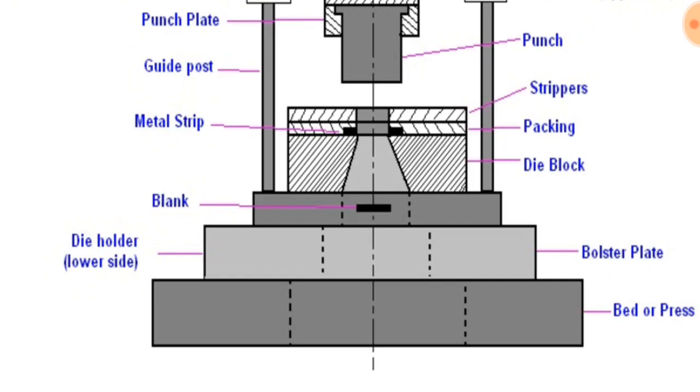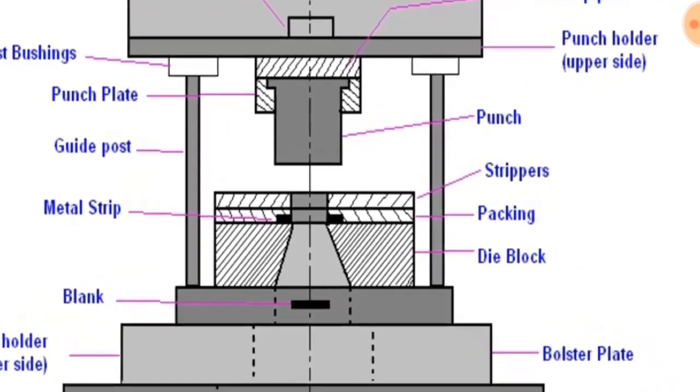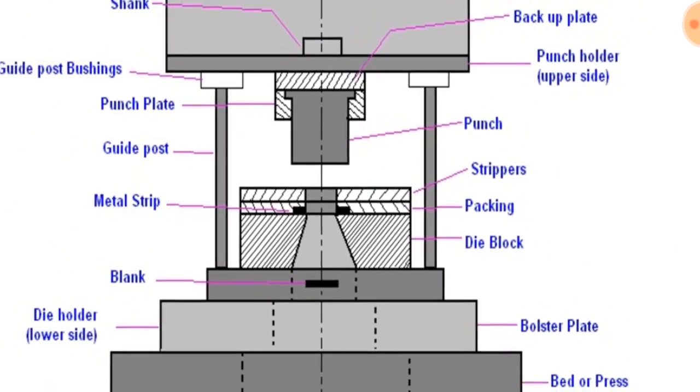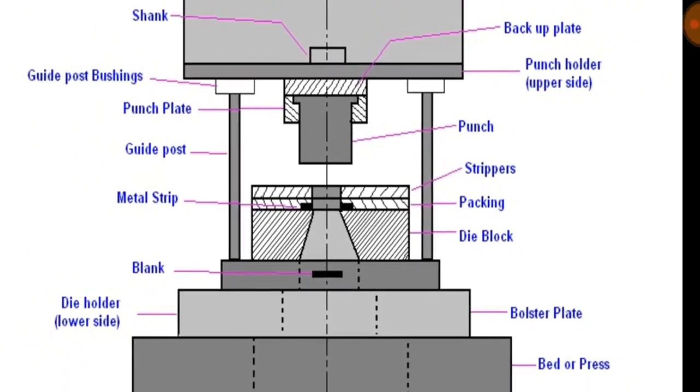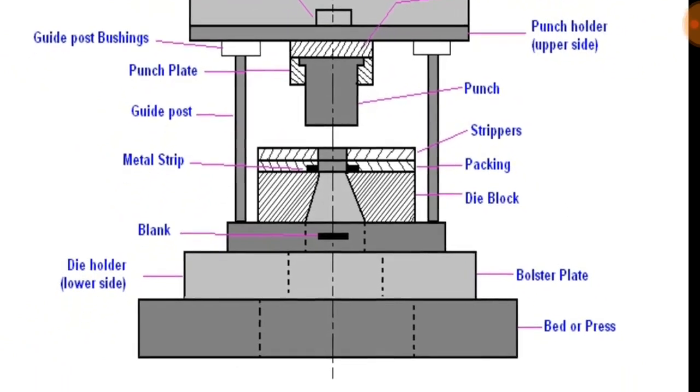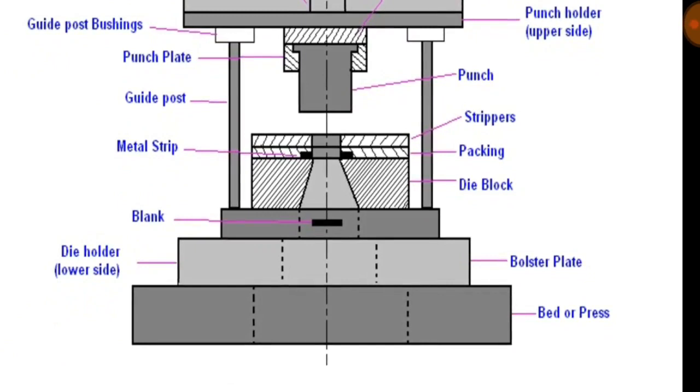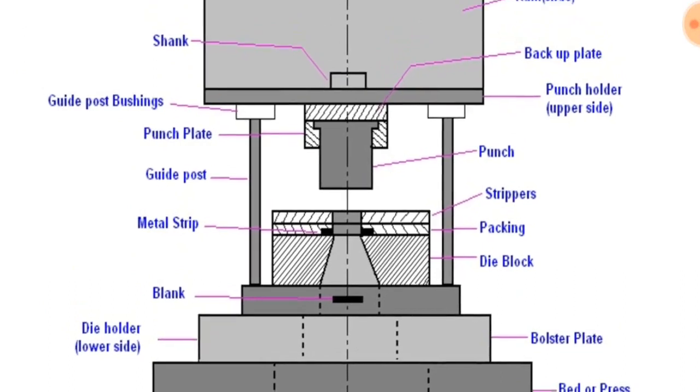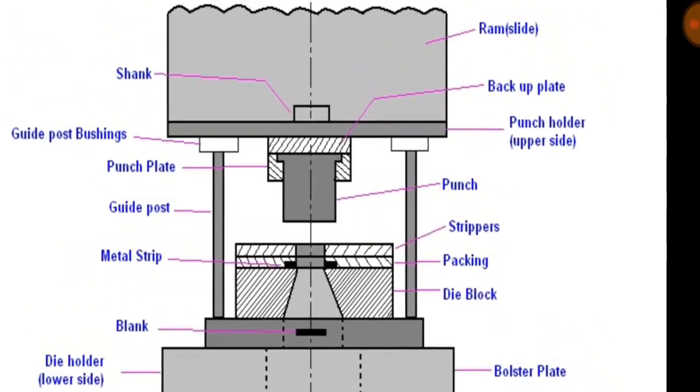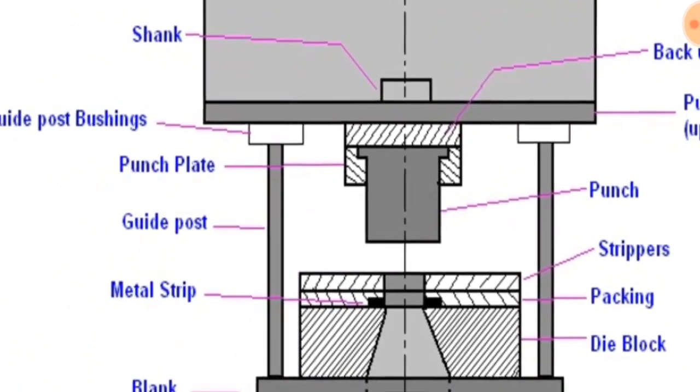Punch: the punch is known as the male part of the die assembly which is directly or indirectly fastened to the press ram. Upper shoe: this is the upper part of the die set which contains guide post bushings. Here you will see the guide post bushings.